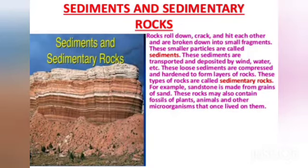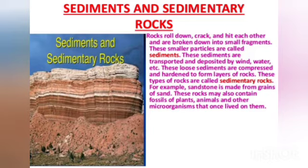The second type of rock is sedimentary rock. Rocks roll down, crack, and hit each other and are broken down into small fragments called sediments. These sediments are transported and deposited by wind, water, etc. These loose sediments are compressed and hardened to form layers of rock called sedimentary rocks. For example, sandstone is made from grains of sand. These rocks may also contain fossils of plants, animals, and other microorganisms that once lived on them.